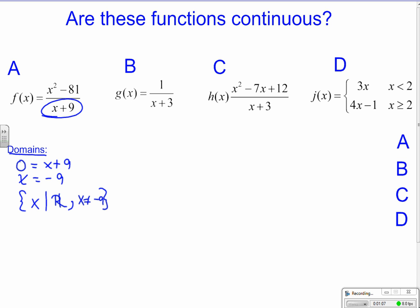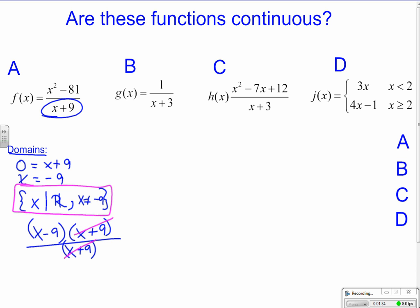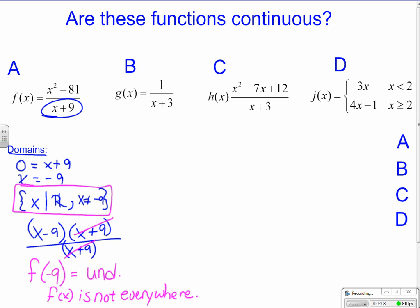Looking at this function and factoring it, the top factors nicely by difference of squares, and I get x plus 9 on the bottom. I notice that I can cancel that away, and I'm left with x minus 9. But I still have the same domain issue. I can't use negative 9 — f of negative 9 does not exist, so it's undefined there. This function f of x is not continuous everywhere because f of negative 9 is undefined.